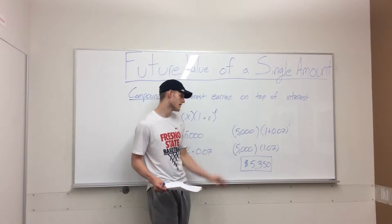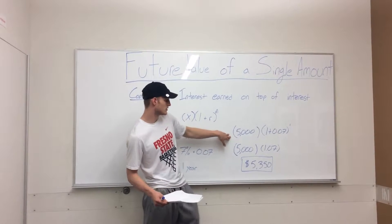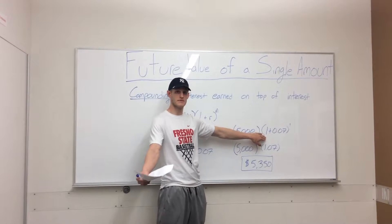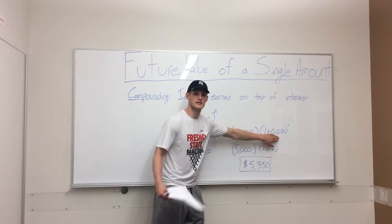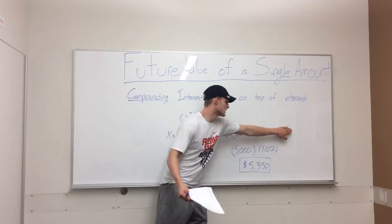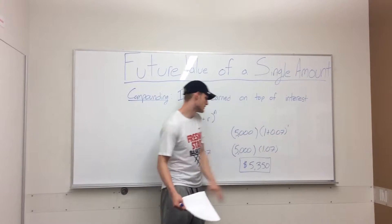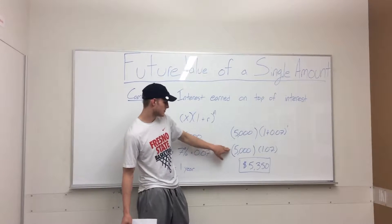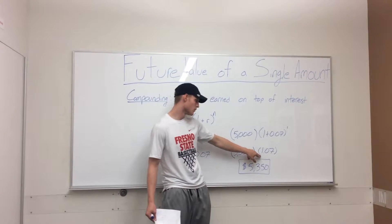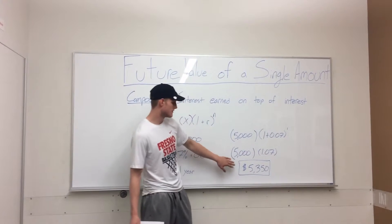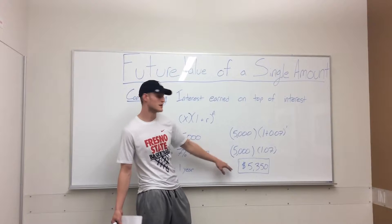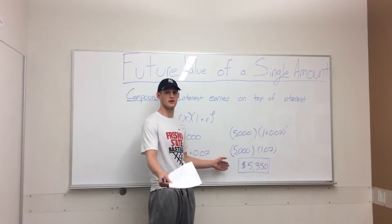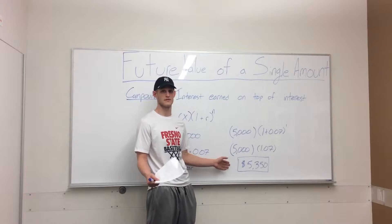We have $5,000 as our initial investment, plus one — that's your investment received back — plus the money you're going to receive on your investment, to the number of periods. That simplifies to $5,000 times 1.07, and that's going to give you $5,350. So you're going to get back $350 on top of your initial $5,000 investment for your first year.